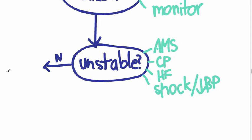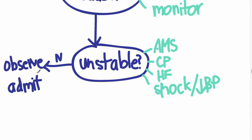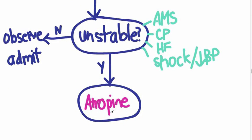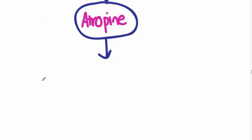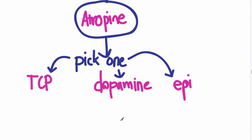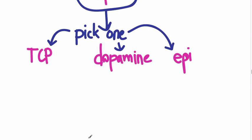If they're not unstable, you observe them and likely admit them to address the underlying bradycardia — they may need a pacer. However, if they are unstable, the first drug you want to give is atropine, 0.5 milligrams every 3 to 5 minutes for a max of 3 milligrams — that's a total of 6 doses. This is different from the old dosing of 1 mg then 1.5 mg. If atropine doesn't work, you have three choices: transcutaneous pacing, a dopamine drip, or an epi drip. If all of this fails, the patient will likely need a transvenous pacer and you'll need to call cardiology.